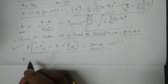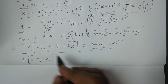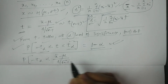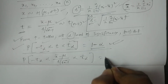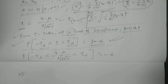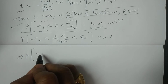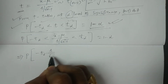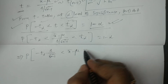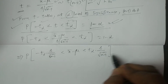Now, P(−Tα < T < Tα) = 1−α. Substituting T = (X̄ − μ) / (S / √(n−1)), we write: P(−Tα < (X̄ − μ)/(S/√(n−1)) < Tα) = 1−α. Which means: P(−Tα · S/√(n−1) < X̄ − μ < Tα · S/√(n−1)) = 1−α.